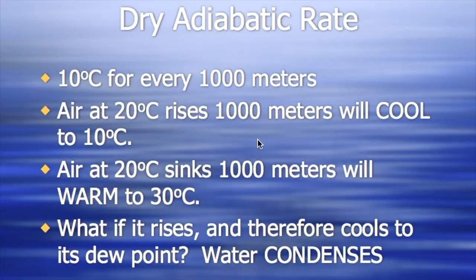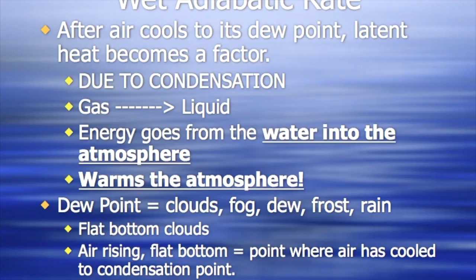But then we have to think about what if it rises and cools to its dew point. Well we already know then that water is going to condense. So then what happens is what's called the wet adiabatic rate. So after air cools to its dew point, that latent heat becomes a factor. Energy goes from the water into the atmosphere and warms the atmosphere just a little bit. And we already know that when condensation happens we're going to get things like clouds and fog and dew and frost and rain.